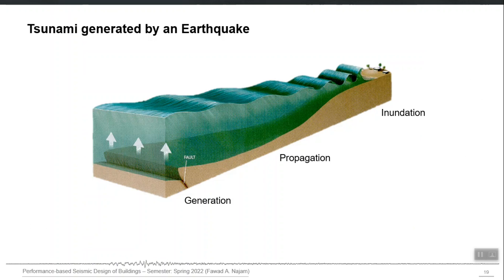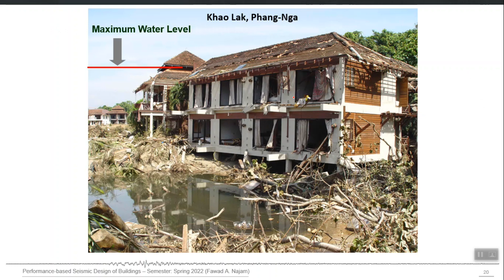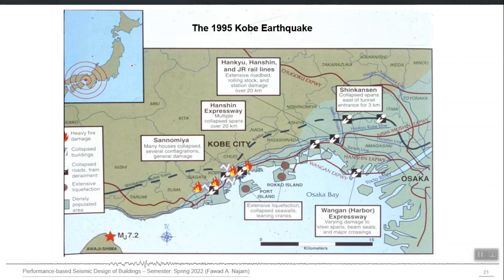Tsunami is also an earthquake-related hazard. It mostly occurs when there is a sudden movement or rupture and the rupture plane lies in the ocean. If there is a fault and a sudden lift of one part of land relative to the other, it creates waves that are initially long-period, but as they reach shallow water they become high-frequency and very destructive. This is an example from Thailand showing the water level during the 2004 tsunami.